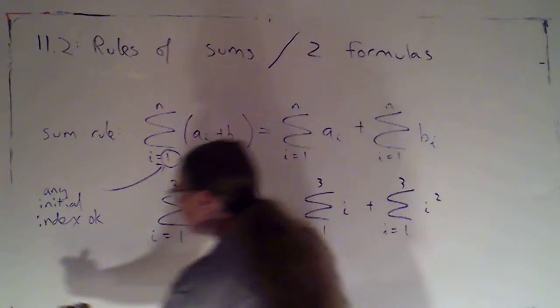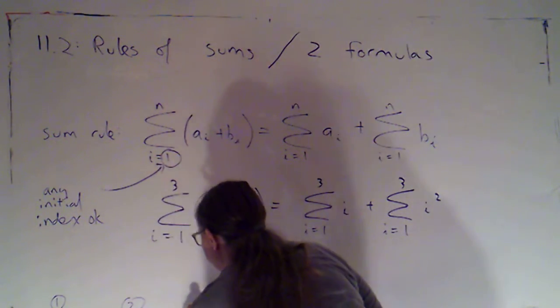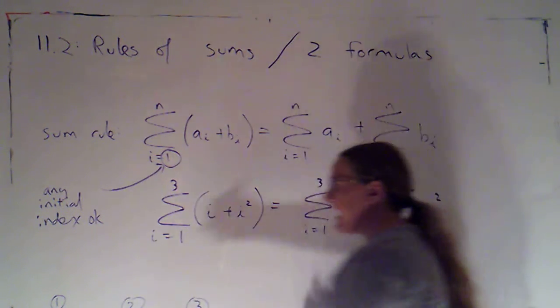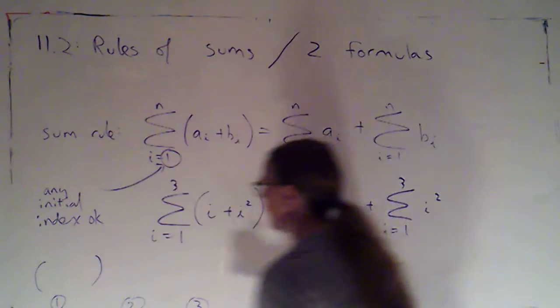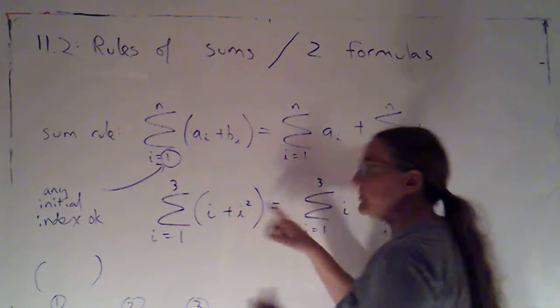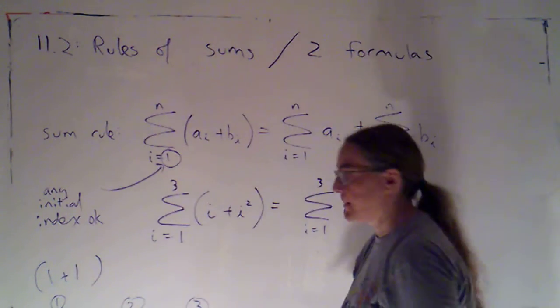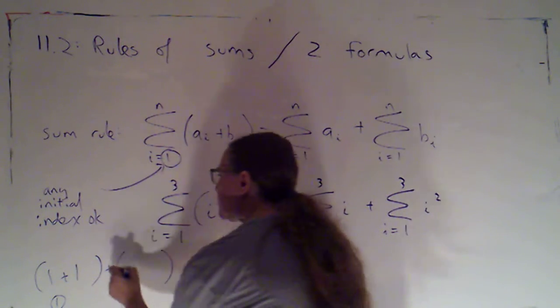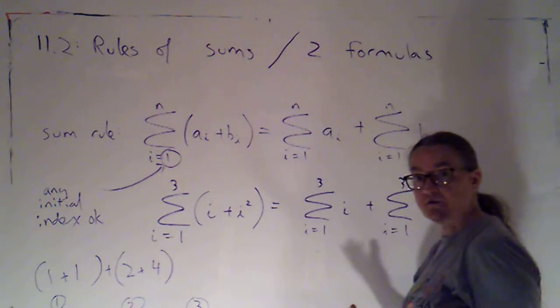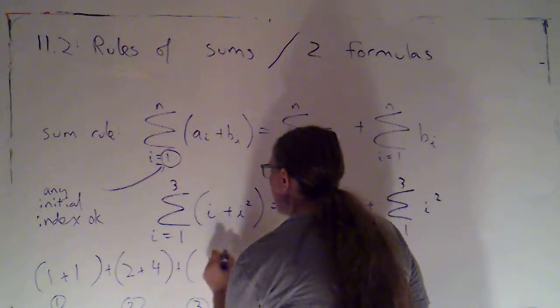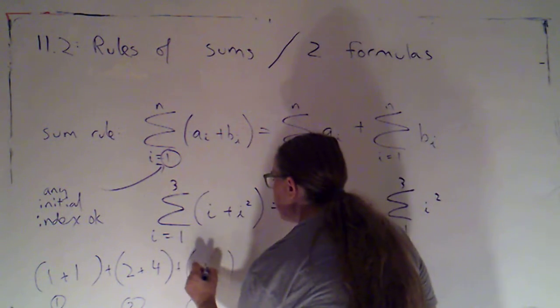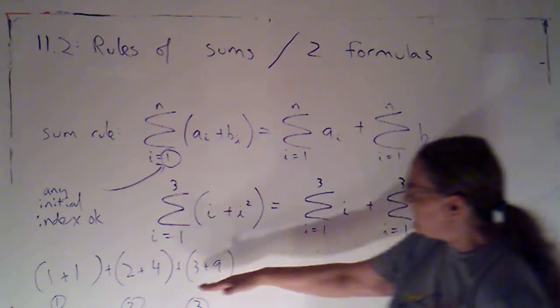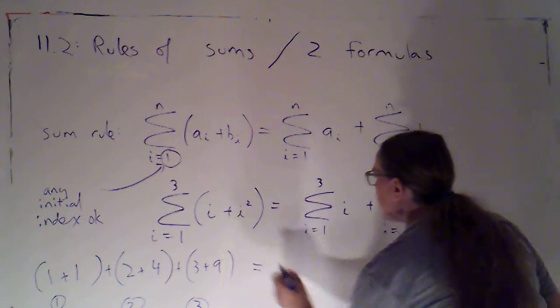So on the left hand side, my index is going from 1 to 3, and each of my terms is going to have two parts. So I'm just going to write that in parentheses. So when my index is 1, I'm getting 1 plus 1 squared, 1 plus 1. Plus, when my index is 2, we're going to get 2 plus 2 squared, which is 4. Plus, when our index is 3, we'll get 3 plus 3 squared, which is 9.